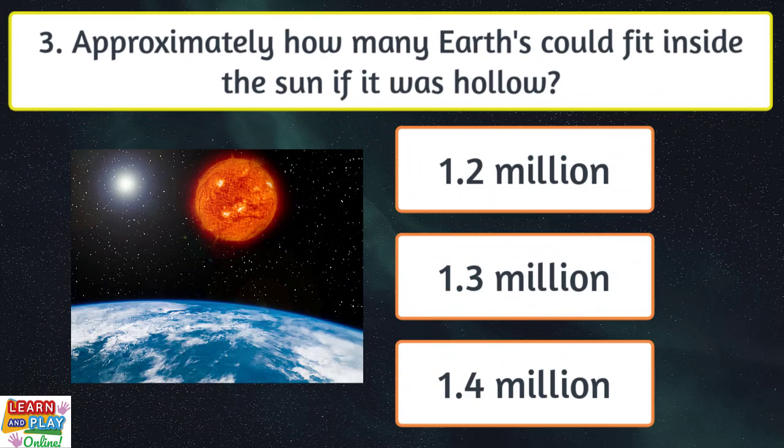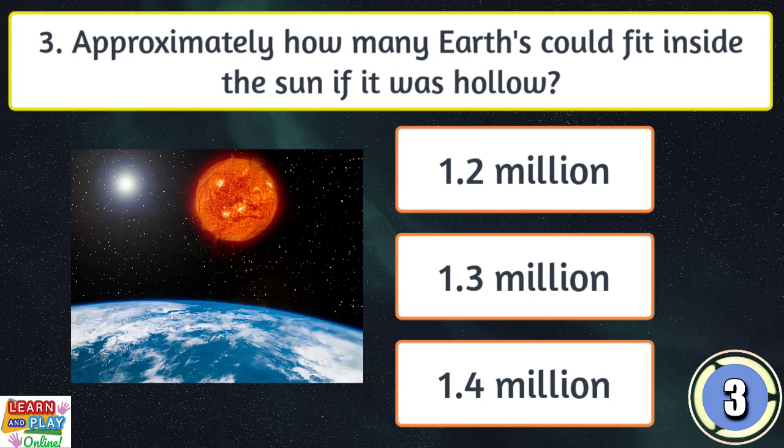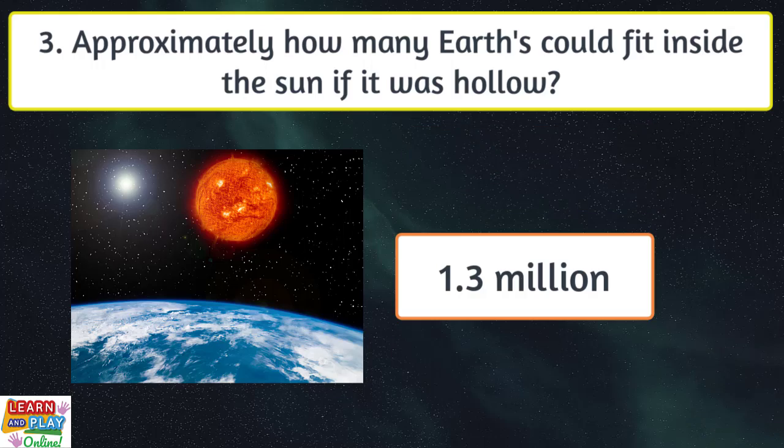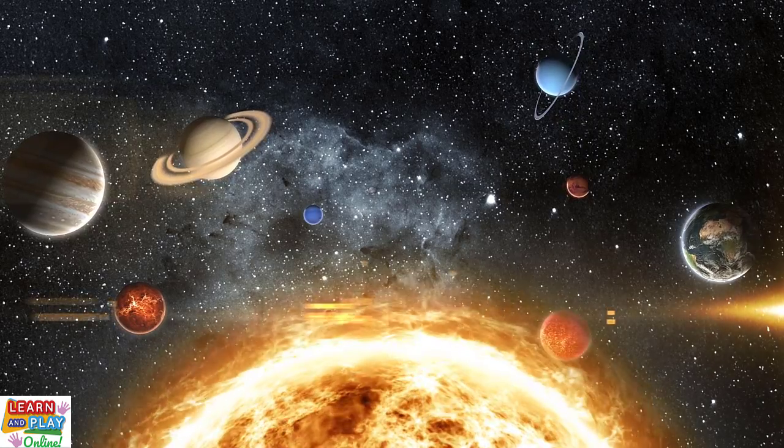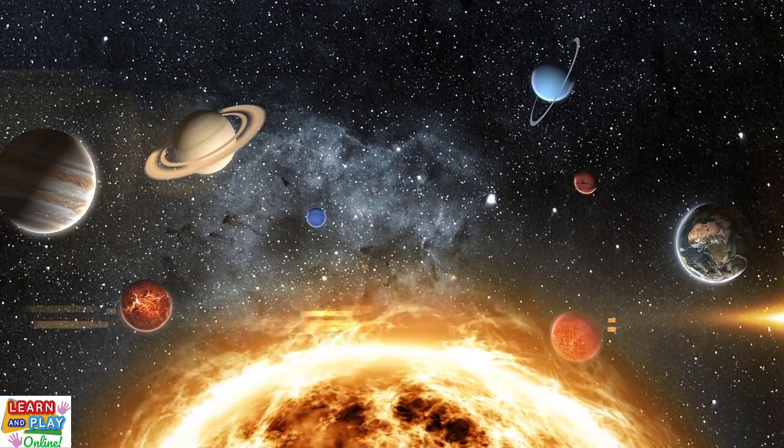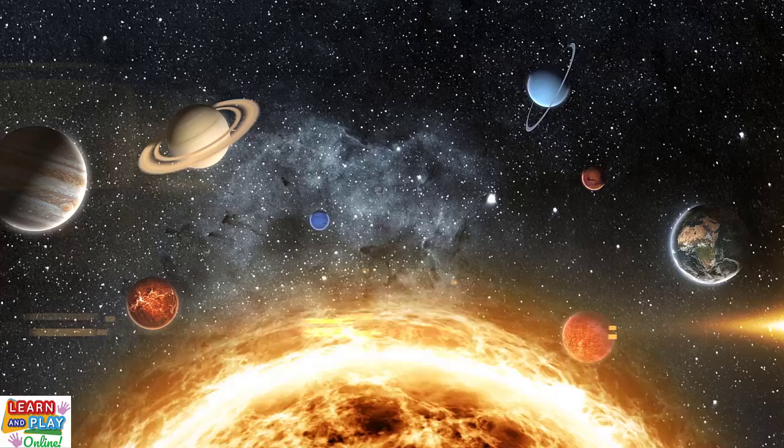Question three. Approximately how many Earths could fit inside the sun if it was hollow? Around 1.3 million. Not only is the sun at the center of our solar system, it is also the largest object in our solar system as well.